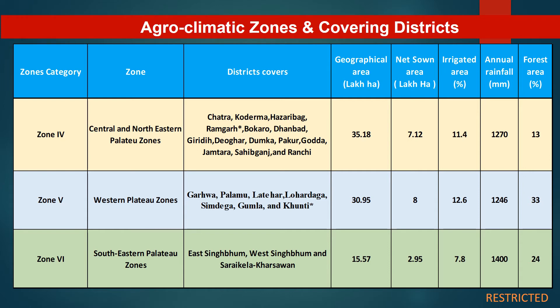The South-Eastern Plateau zone covers districts East Singhbhum, West Singhbhum, and Saraikela Kharsawan, with a geographical area of 15.57 lakh hectares. The net sown area is around 2.95 lakh hectares. The irrigated area contribution is 7.8% of total sown area, rainfall is around 1400 mm, and forest area contribution is around 24%.